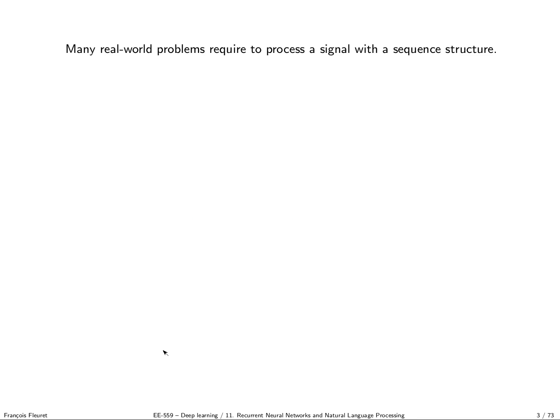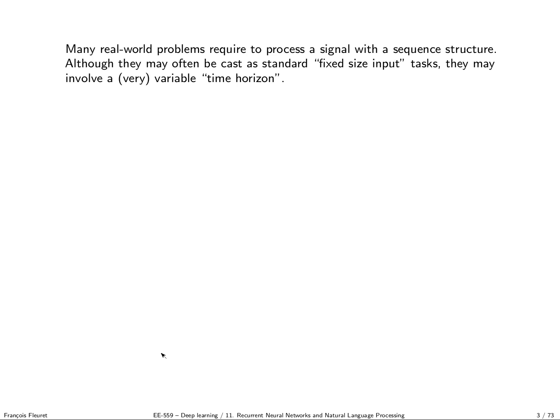Recurrent neural networks were introduced mostly to process sequences. In many real world problems, we cannot cast the task as we did until now, which is having a fixed size input from which we compute a value, a class or a quantity. In many problems, the size of the input signal depends on the actual sample — it's simply a sequence that can be a sound sample, a video, or any object whose length is not constant.